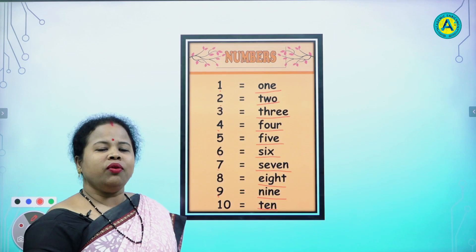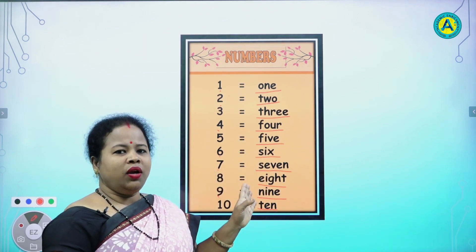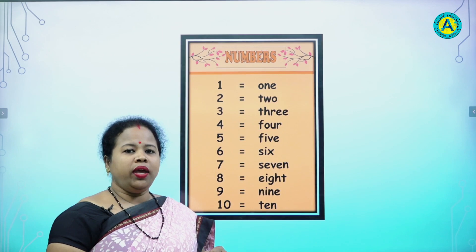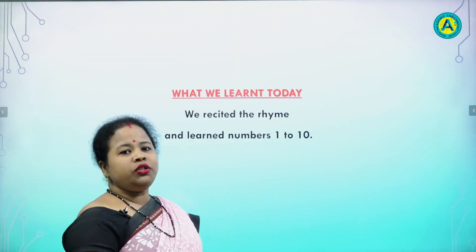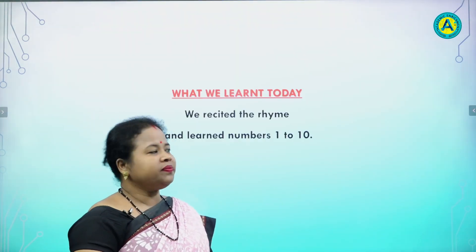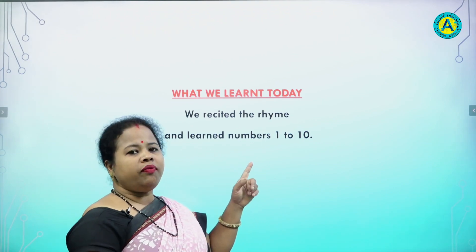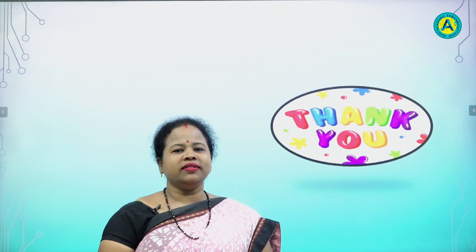Now you have learned numbers 1 to 10 with their number names. Now we go for the next slide. What did we learn today? We recited the rhyme and learned numbers from 1 to 10. That's all for today. Ok children, bye bye!